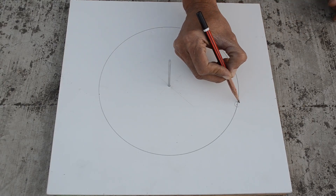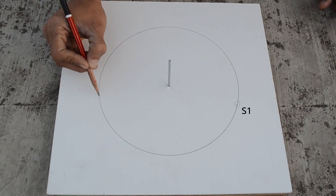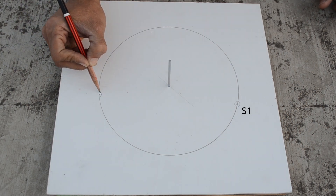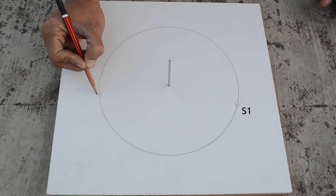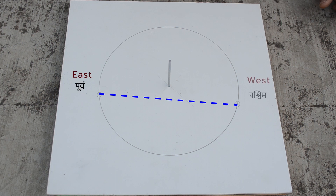The line connecting these two points, S1 and S2, indicates the orientation of the east-west direction — with this side pointing east and this one pointing west.